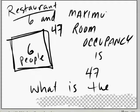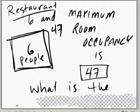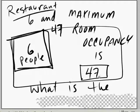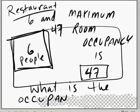Maximum room occupancy is 47. So if there are six people in the room now, a room that can hold 47 people, what is the current occupancy?